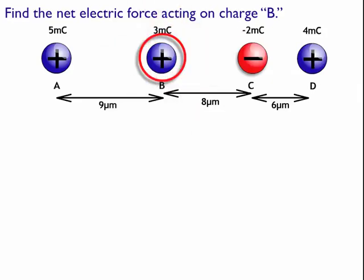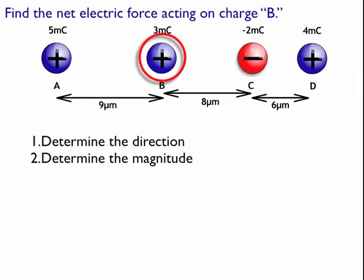So to find the electric force, I'm going to use Coulomb's Law. To do this, I need to find two things. I need to first figure out the direction of all the forces that are going to be applied to B, and I'm going to determine the magnitude of those forces.